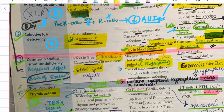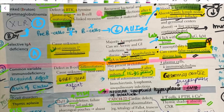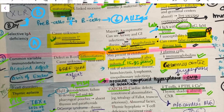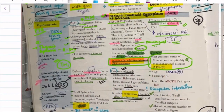Comparing X-linked agammaglobulinemia and CVID: in CVID there is a defect in T cell differentiation and the defective gene is BAFF, whereas in X-linked it is a B cell maturation defect with BTK gene. X-linked manifests after six months of age in infants; CVID manifests usually after puberty, around 15–35 years of age. In X-linked there are absent germinal centers; in CVID there is germinal center hyperplasia. A specific finding in CVID is nodular lymphoid hyperplasia of the intestine due to Peyer's patches hypertrophy.